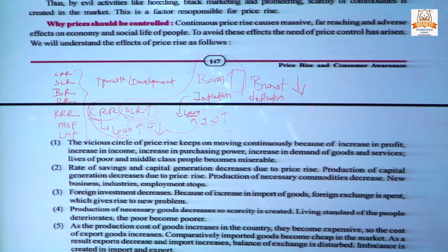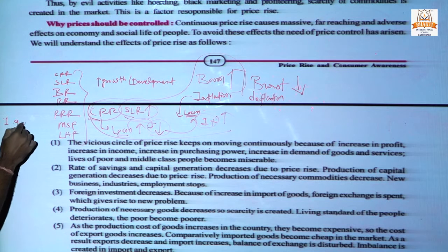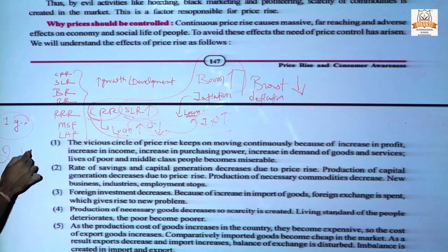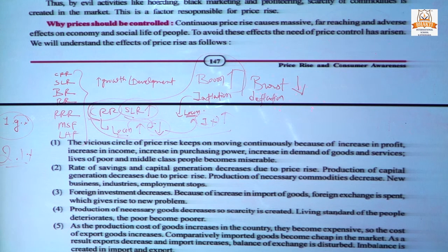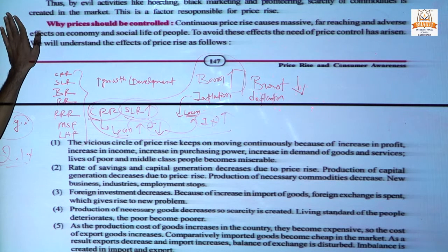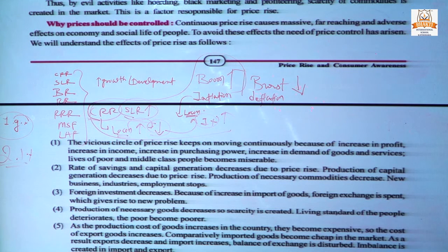Price rise increases mostly during boom conditions. Next reason: population growth. India's population growth is given as 1.9% in the textbook, but currently it is growing at 2.1%, which is a very big problem. Sudden demand is seen in the market but supply does not match it, so price rise occurs. There are many other factors such as hoarding, profiteering, black money usage — the government has exposed these things. Read those once; they are very easy.